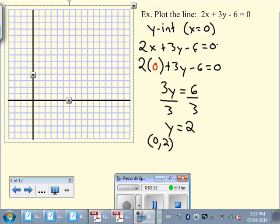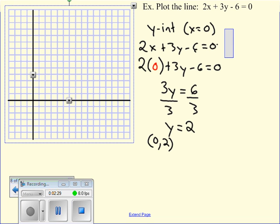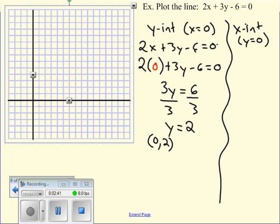Now what about for my x-intercept? So my x-intercept is going to be when y equals zero. Same equation, but in this case, I now have 2x plus 3y minus 6 equals zero. 2x plus 3, substitute the zero in for y, minus 6 equals zero. And now I have 3 times zero. So I have 2x minus 6 equal to zero.